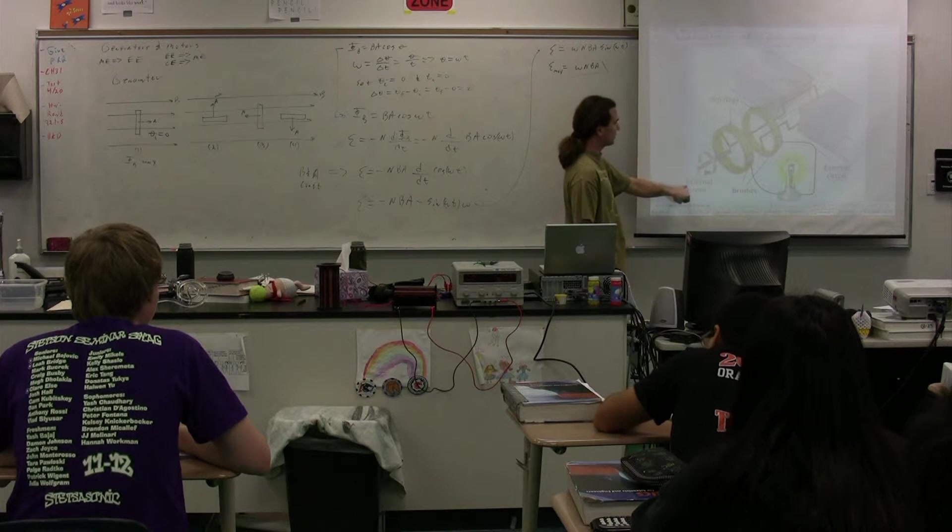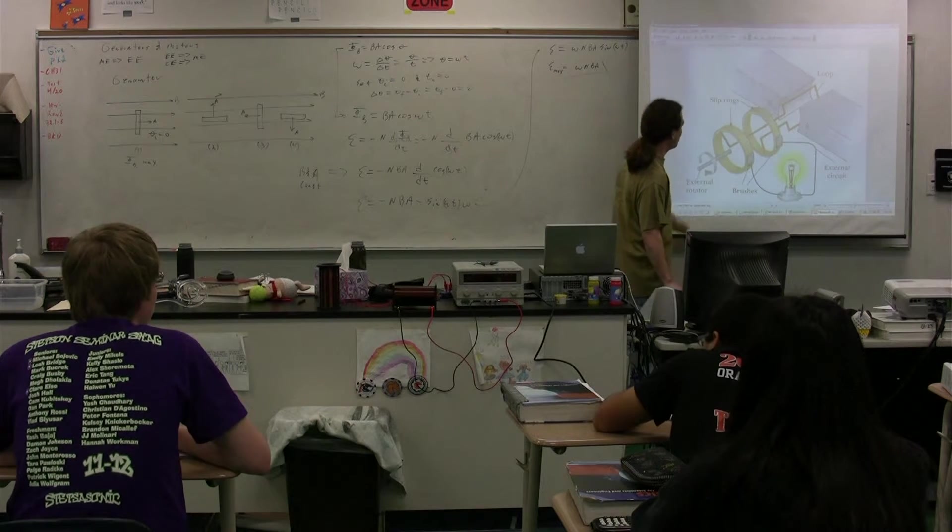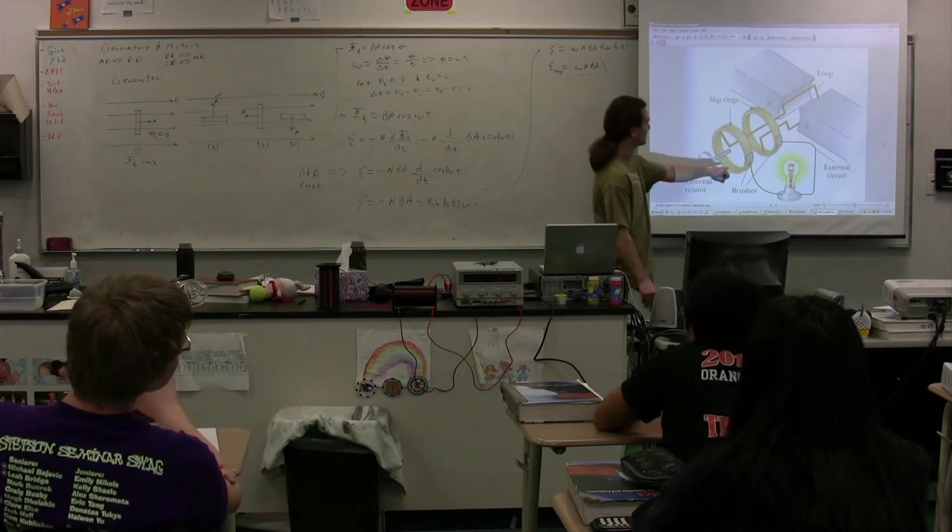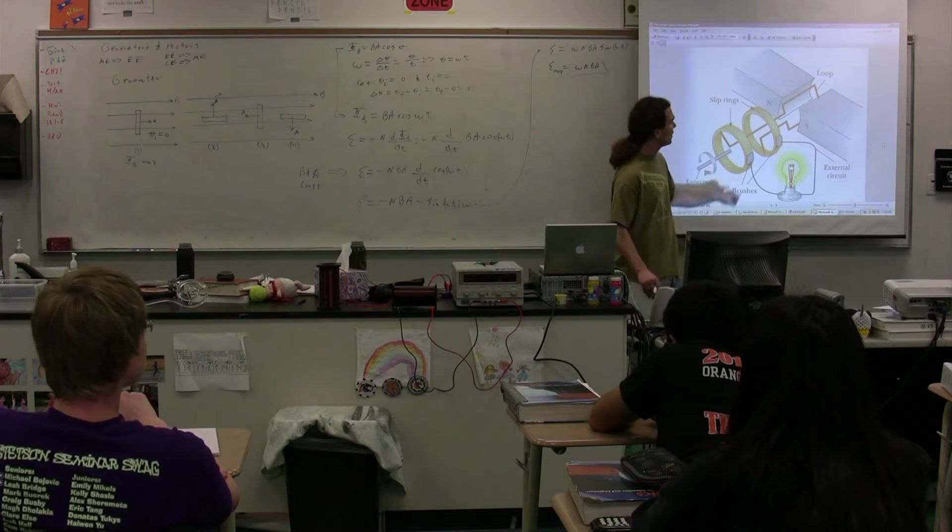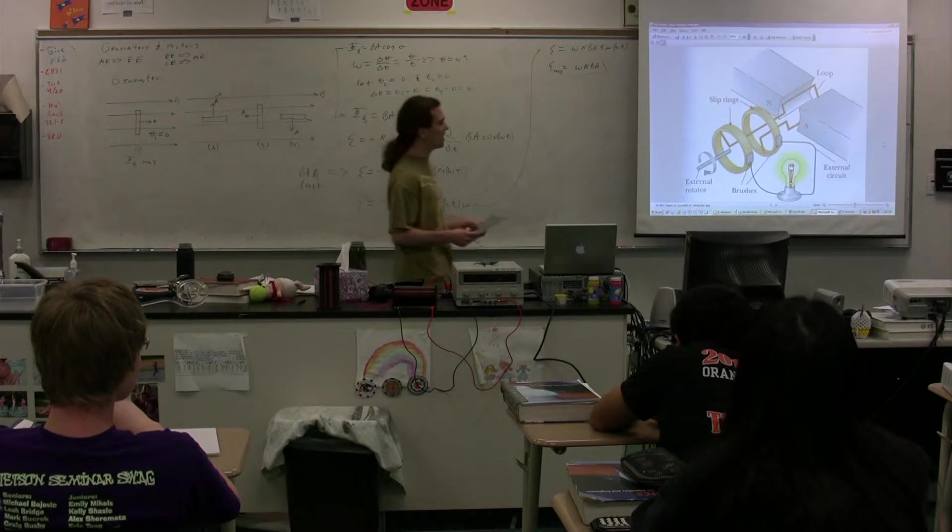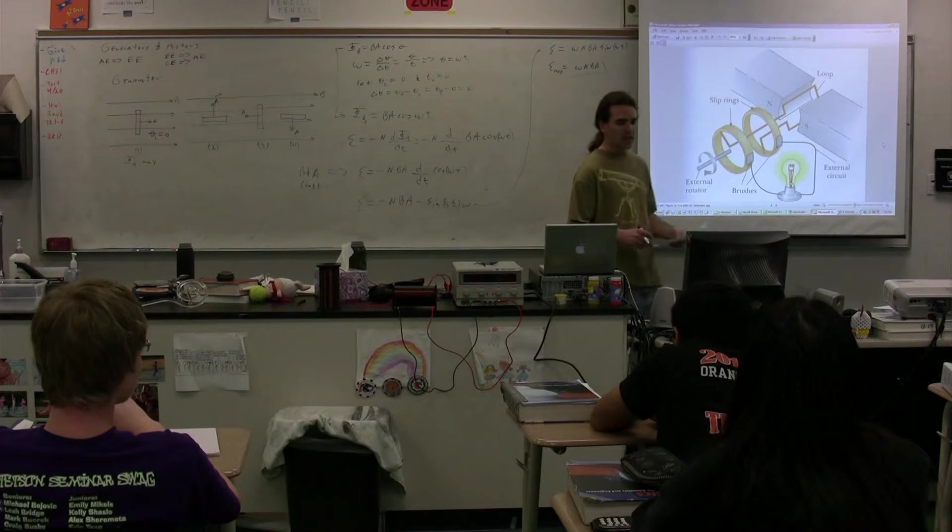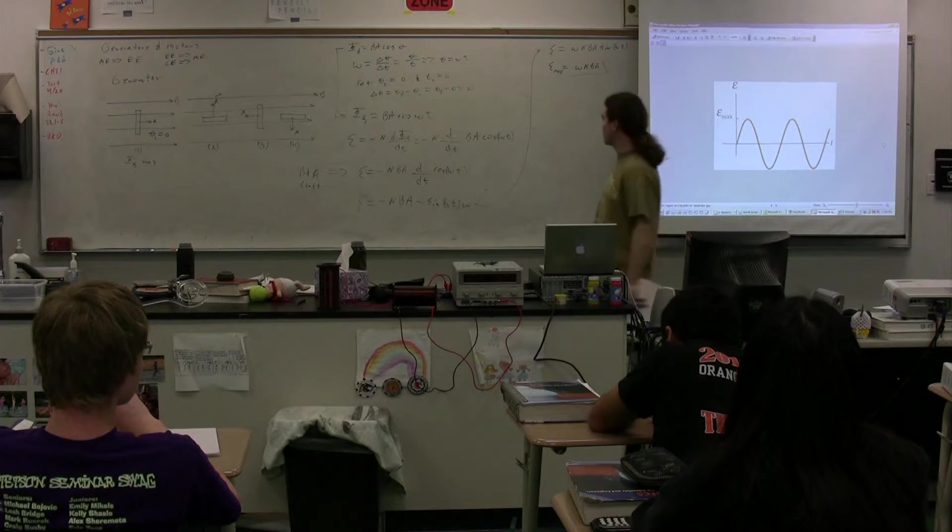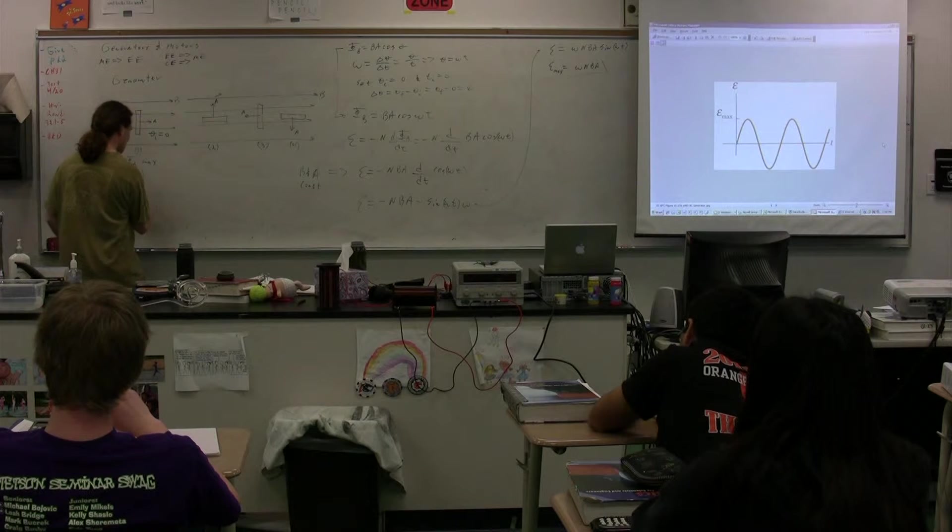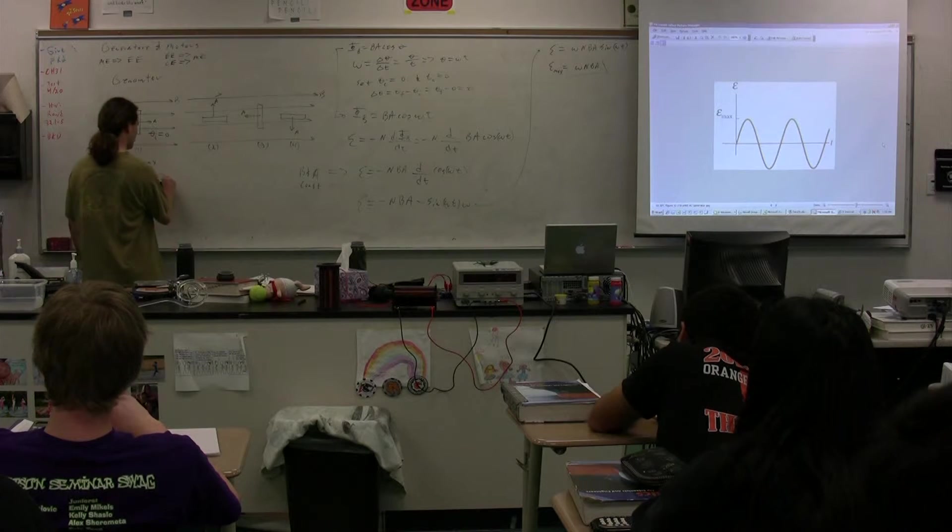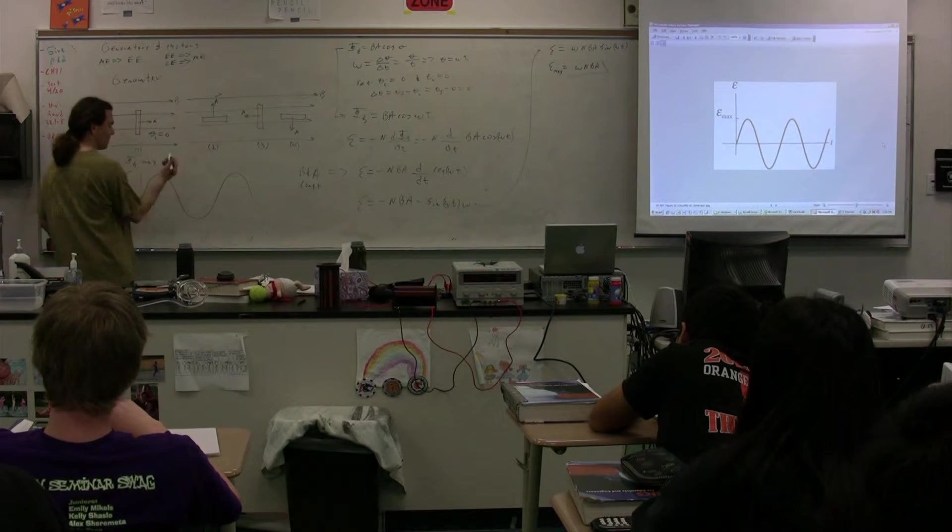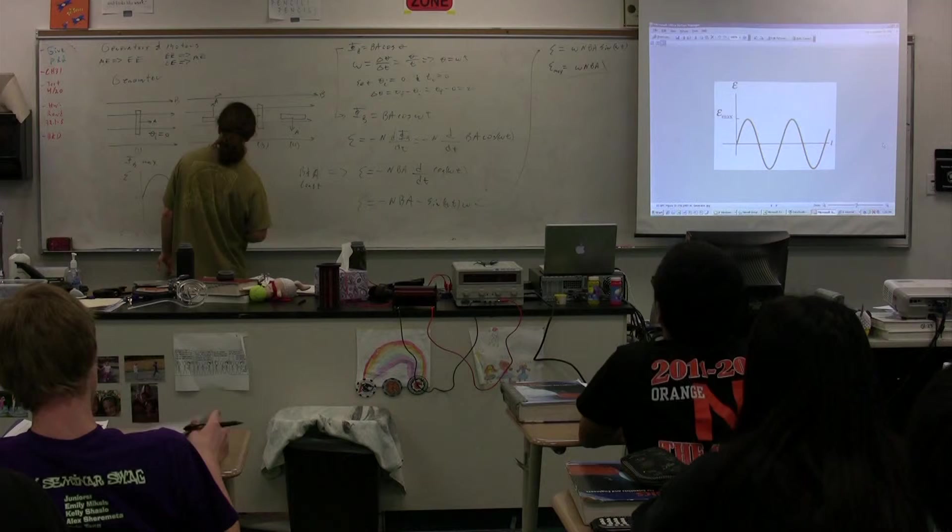And again, some sort of external thing is rotating this loop. And then, you have these slip rings, which are going to cause a current to be able to pass through these various rings. Now, if you'll notice, what happens is, the direction of the current is actually changing the whole time. So, this is an alternating current generator. And it will create current that actually looks like this, where you have the current changes as a function of time. Or, the EMF, because the EMF and the current are related. So, the EMF will change as a function of time.